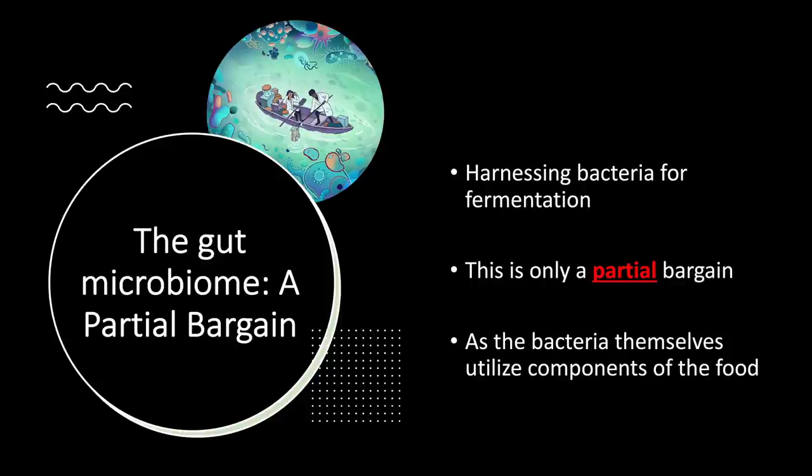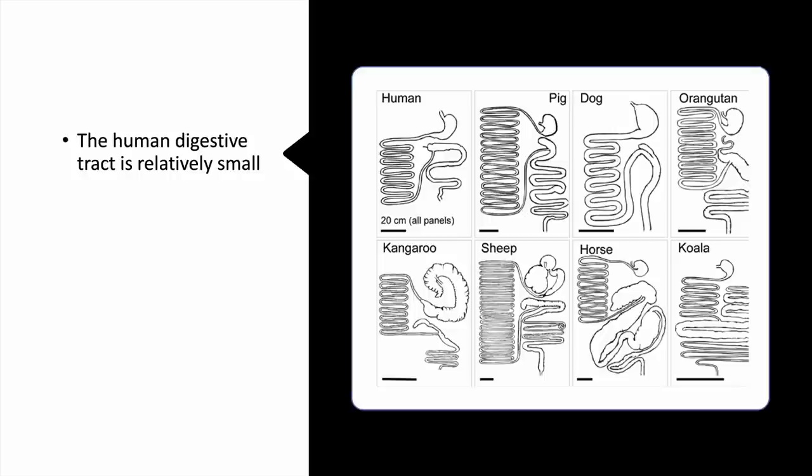Anything to do with the gut microbiome is a partial bargain. If we're utilizing bacteria in our colon to ferment things like fibre, non-absorbable carbohydrates, and even protein, it is definitely a partial bargain because the bacteria themselves utilize the components of these foods — they utilize the vitamins and energy sources such as short-chain fatty acids. So we only get a partial amount of what they've generated for us. The human gut is actually very, very simple.